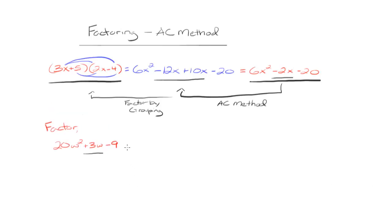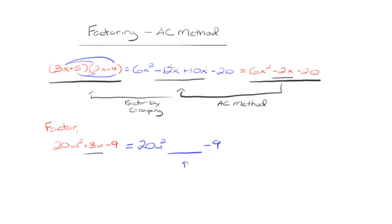So here we go. The first step: we take this 20w squared, rewrite the middle term 3w into two different terms that add up to 3w, and keep the minus 9. The tricky step is finding how to make that split.